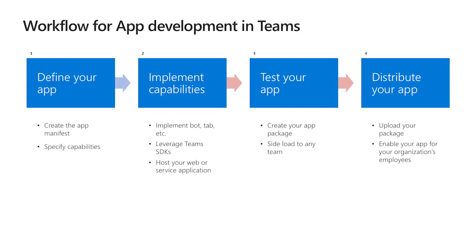Here's an overview of a typical workflow for developing apps in Teams. It starts with the developer defining the app by creating an app manifest — a JSON file with various sections describing the capabilities of the application, such as tabs, bots, and messaging extensions. You implement these capabilities by writing code and leveraging the Teams SDK. We have a JavaScript SDK for tabs, and SDKs for bots in Node and .NET. Then you host your application, for example on Azure, test it, create an app package, and sideload it into a team. Once things look good, you can distribute by uploading to your tenant catalog or publishing to AppSource.